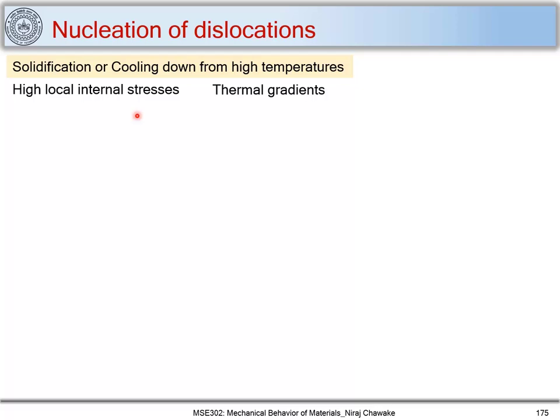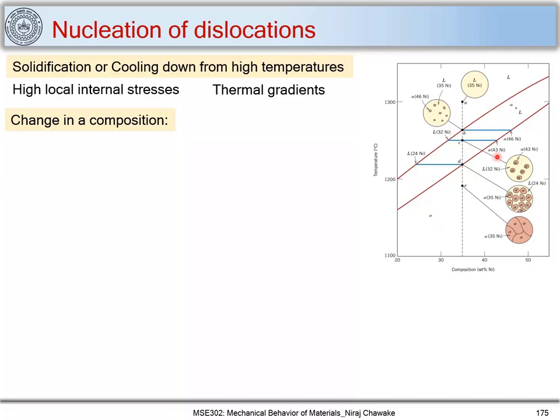Another reason is a change in composition, which also happens during solidification. Consider the copper-nickel phase diagram for a composition of 35 weight percent nickel. As you go from liquid to solid, you can see that the liquid has 35 weight percent nickel, but when it starts solidifying, the alpha phase formed corresponds to 46 weight percent nickel.